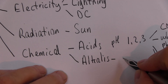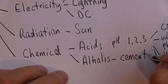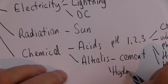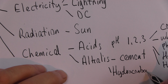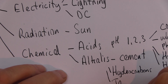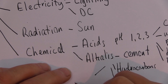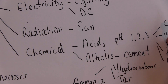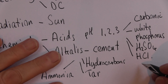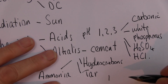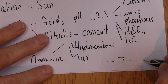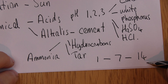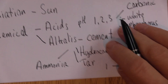Alkaline agents include things like cement or plaster for plastering walls, hydrocarbons, tar, and ammonia — all alkalis. These have high pH values: one is a strong acid, seven is neutral, and fourteen is a strong alkali. Ammonia in reasonable concentration has a pH of 14.